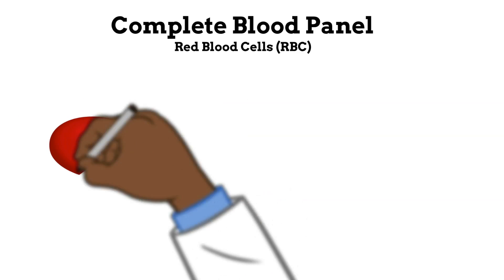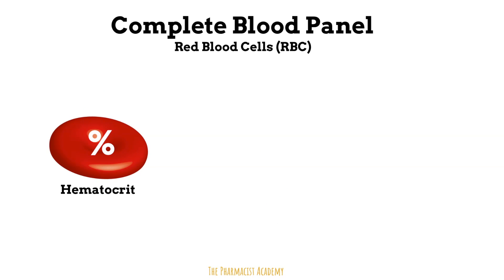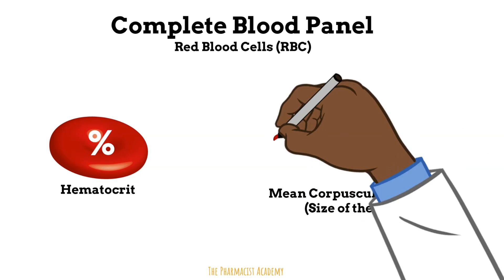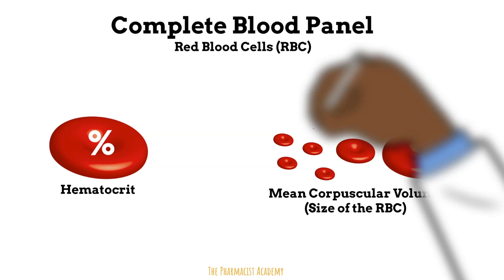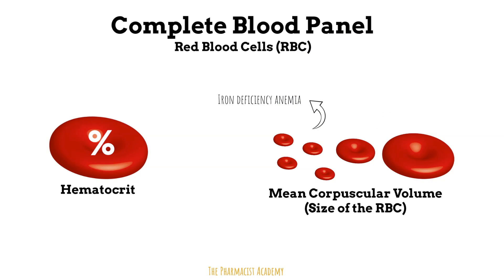Next on the CBC is usually the hematocrit, which is the percentage of red blood cells in your blood as a whole. Because of that, it follows the same concept as previously discussed with hemoglobin. Next is the mean corpuscular volume, which refers to the size of the red blood cells. In clinical practice, it helps us diagnose the cause of anemia — smaller red blood cells are usually due to iron deficiency, and larger red blood cells are usually due to B12 or folate deficiency.